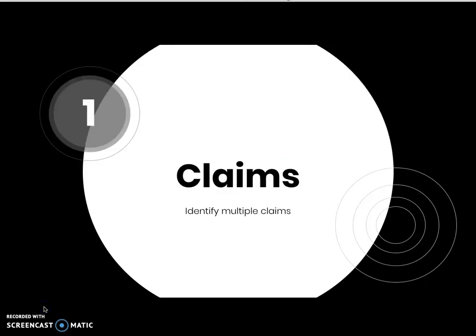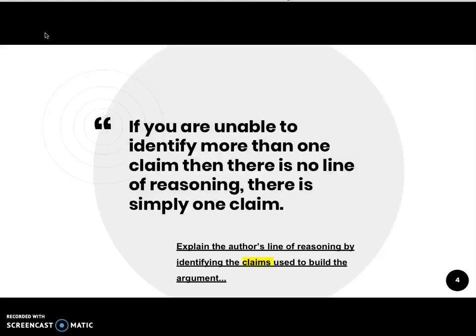A claim is one statement that has evidence and reasoning, but a line of reasoning needs to have multiple claims. So if we're presented with a resource, what we need to be able to do is identify the multiple claims that might be in that particular piece. That could be two, three, or four claims, or it might be seven or eight. For the purposes of AP Seminar, we're going to operate on the assumption that we need to identify at least three connected claims in order to evaluate a line of reasoning. If you're unable to identify more than one claim, then there is no line of reasoning — there is simply one claim.